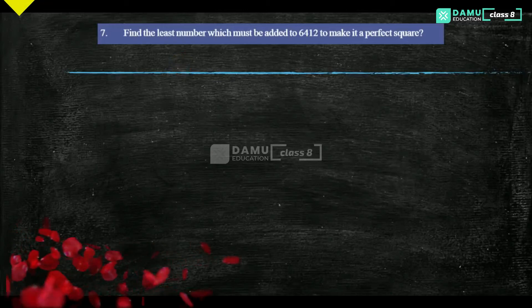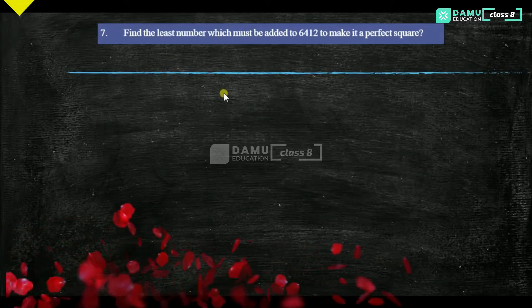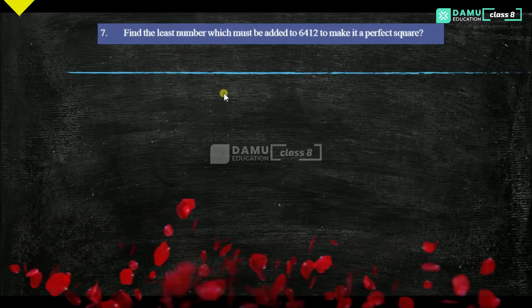Hello viewers, our next question is: find the least number which must be added to 6412 to make it a perfect square.